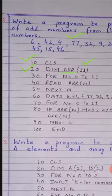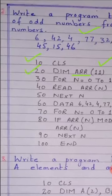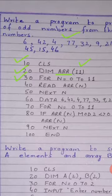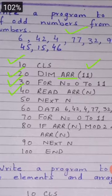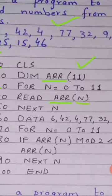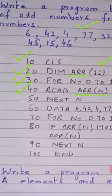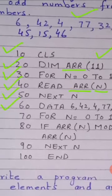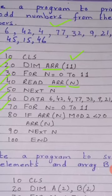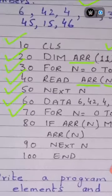چونکہ یہ 12 numbers دیے گئے ہیں اس لیے array کے 12 elements ہوں گے۔ Line number 30: loop start کر رہے ہیں — for n is equal to 0 to 11۔ Line number 40: read statement use کر رہے ہیں array کو fill کرنے کے لیے — read arrr(n)۔ جیسے جیسے loop چلے گا values store ہوتی جائیں گی۔ Line number 50: next n۔ Data statement میں وہ تمام numbers لکھے جاتے ہیں جو program میں دیے گئے ہیں۔ Line number 70: for n is equal to 0 to 11۔